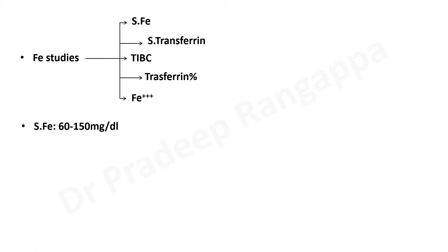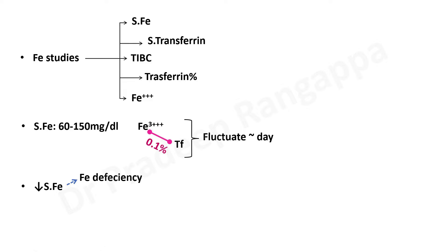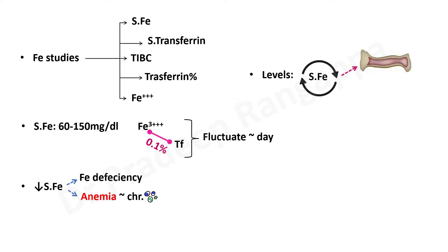When you look at total iron or serum iron, the normal level is 60 to 150 micrograms per deciliter. It indicates the iron which is bound to transferrin — only 0.1% is bound to transferrin, which is a protein. These levels tend to fluctuate throughout the day based on binding to transferrin. A fall in serum iron can happen due to iron deficiency or due to anemia of any chronic inflammatory disease. Iron cycling predominantly happens from the bone marrow and reticulo-endothelial macrophages, which is why these levels fluctuate.